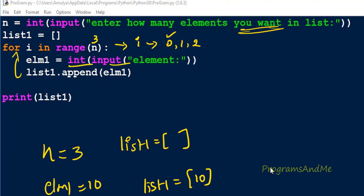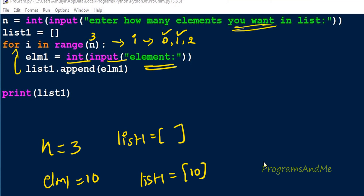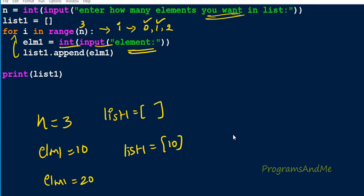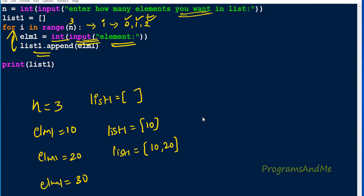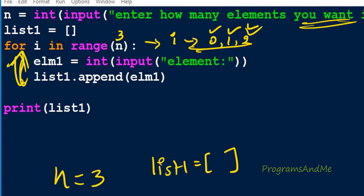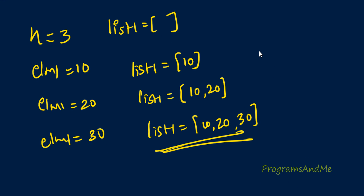Control goes back and i becomes 1. It takes input again — if I enter 20, element1 becomes 20. It appends that to list1, so list1 becomes [10, 20]. Control goes to the for loop again, i becomes 2, and it executes int(input('element')). I enter 30, so element1 becomes 30. It appends that value, so list1 becomes [10, 20, 30]. Now control goes back to the for loop but range is over, so it exits the loop and executes print(list1), printing the list.